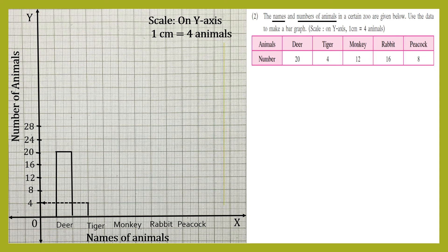Next, number of tigers are four, so one vertical line to height four, a second vertical line, and we join these lines with a horizontal line using scale and pencil. The height is till four. Next, number of monkeys are 12, so first vertical line till 12, second vertical line till 12, and we join both tops with a horizontal line. Height is 12 — correct as per the given data.